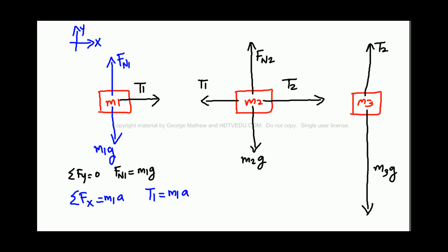When you look at mass M2, again, we have net force along the vertical. Net force along the vertical is equal to 0. What does that give us? It implies Fn2 equals M2g.